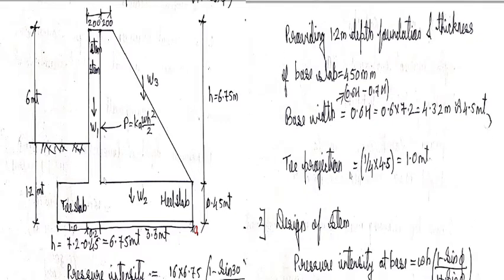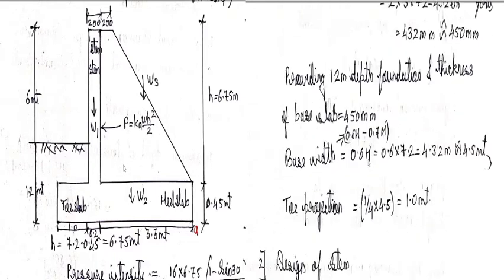Now toe projection that is 1.4 of 4.5 meter that is 1 meter. So in total you can see here this is 1 meter, this is 0.2 meter and this is 3.3 meter. So this is how the projection is decided.